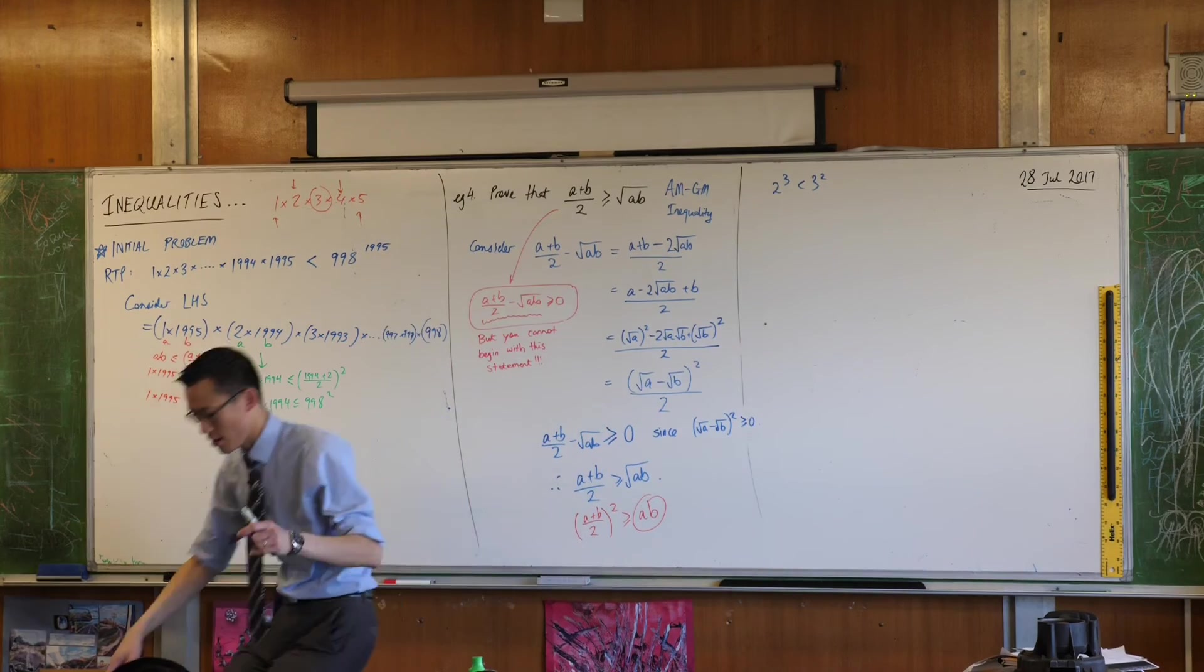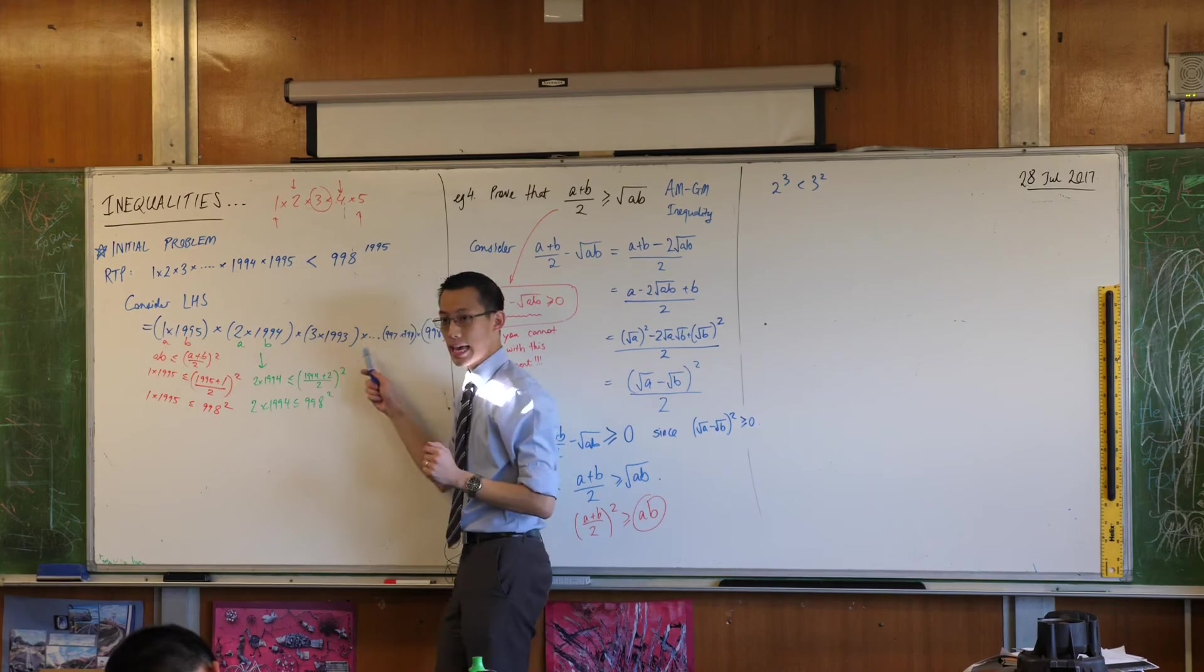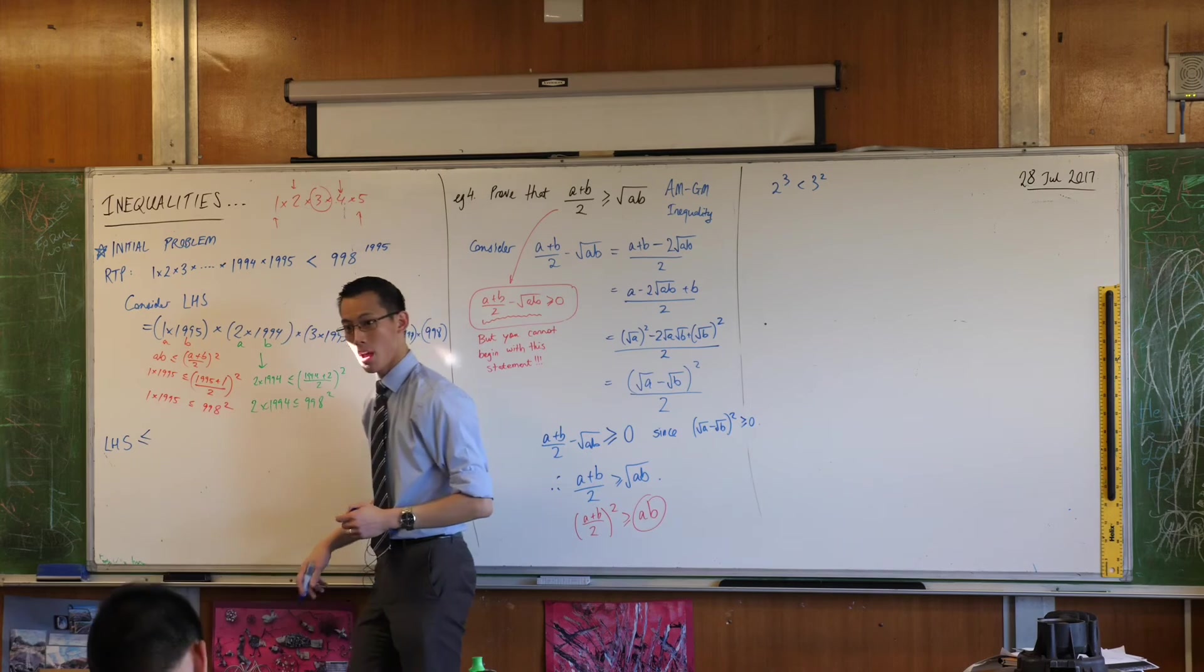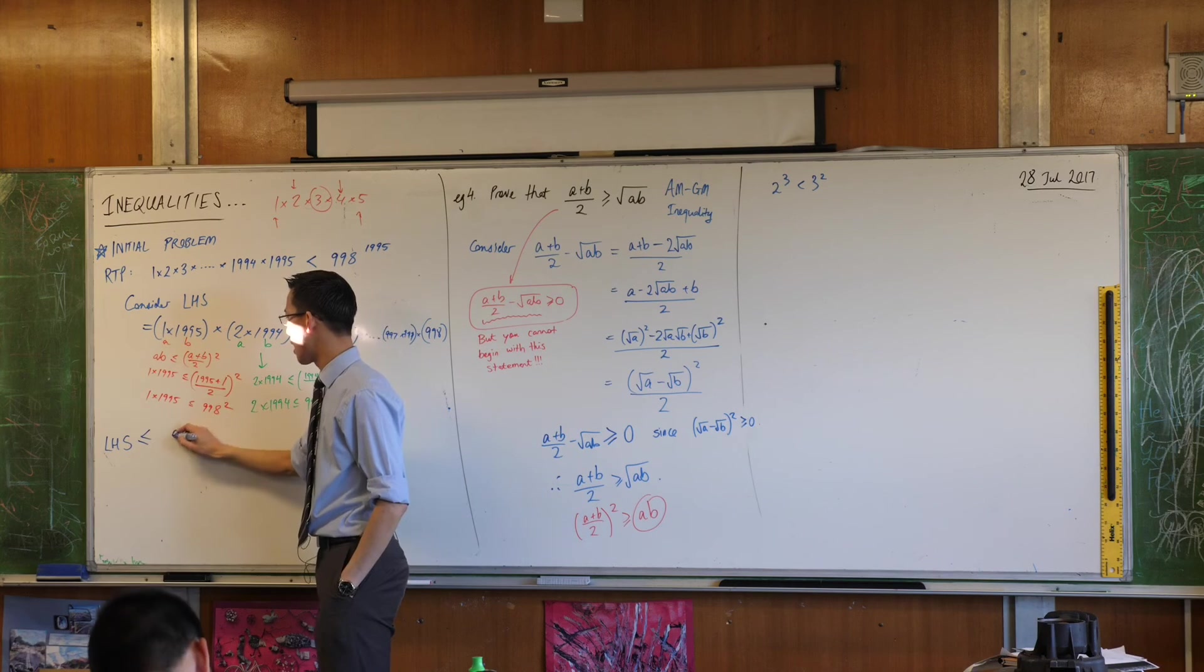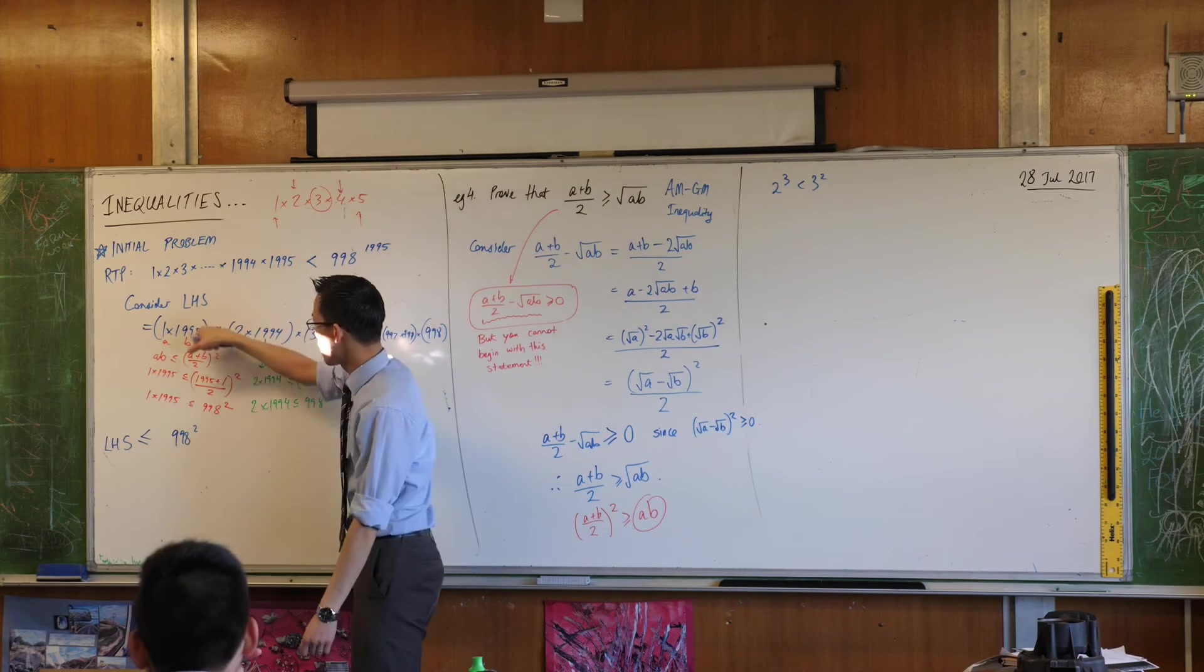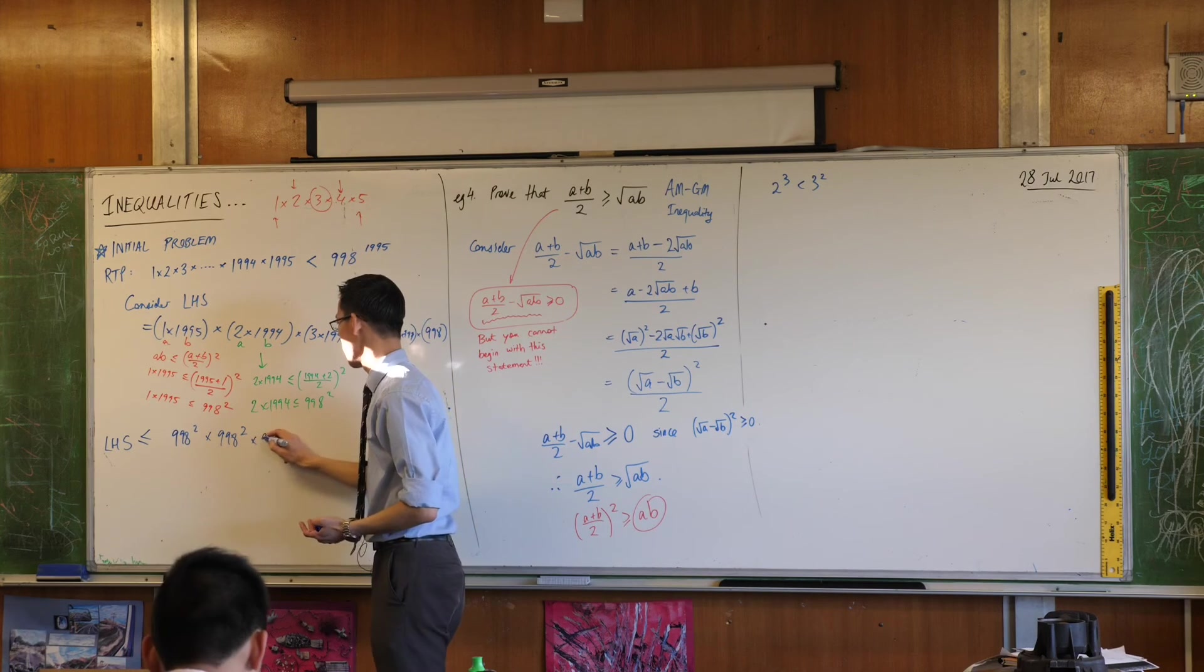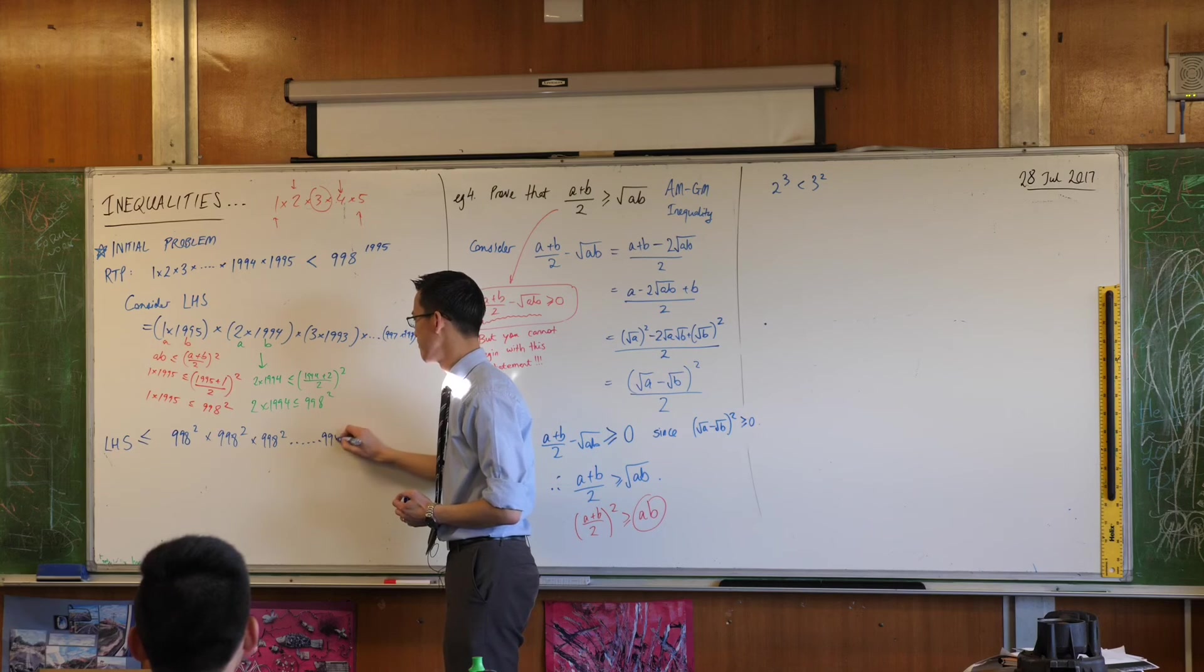So what I'm going to do is, remember, inequalities are a little bit different to equations. I can swap all of these things out. I can swap all of these things out for something that is bigger. So I've still got my left-hand side over here. But what I'm going to do is, see how 998 squared is bigger than this? Well, if I swap this for 998 squared, then what I've got over here will be bigger than what I started with. Does that make sense? So I'm swapping out a number for something bigger. I'm going to swap out this number for something bigger as well. Like so. And this will also be that.